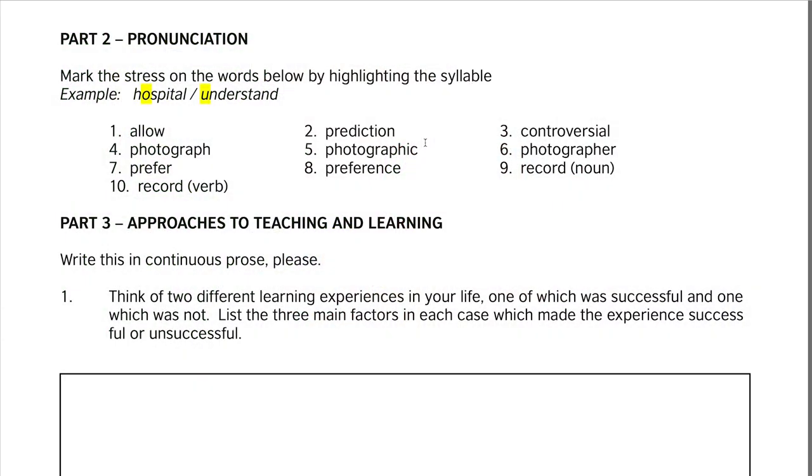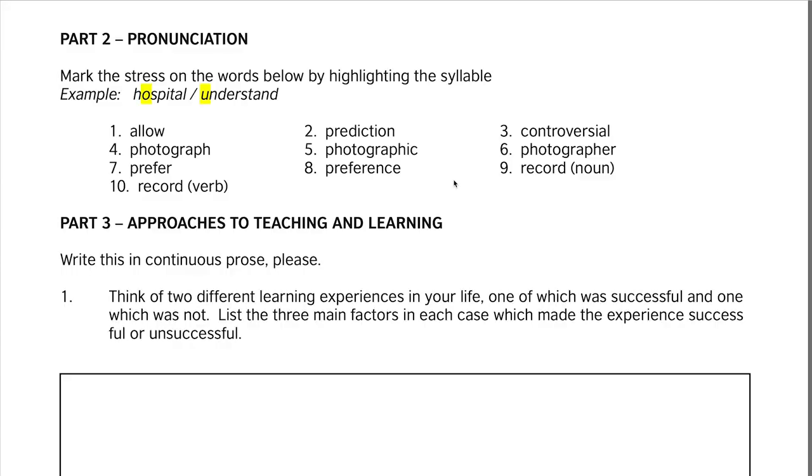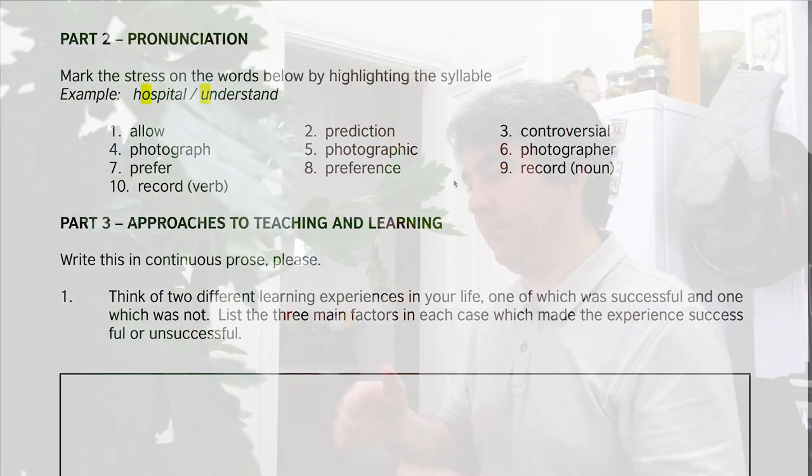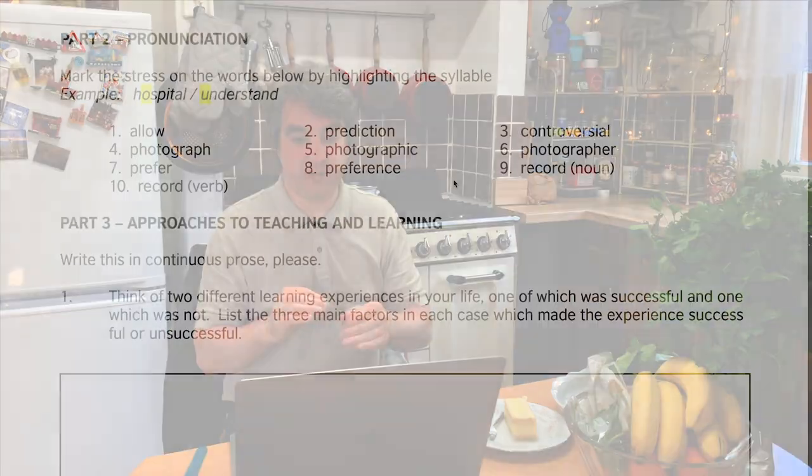Number two: 'prediction' — the stress is on 'DIC': pre-DIC-tion. Next: 'controversial' — the stress is on 'VER': con-tro-VER-sial. Then 'photograph' — PHO-to-graph — and 'photographer' — pho-TOG-ra-pher. You can hear the stress shift between those two. Number seven: 'prefer,' and then 'preference' — PREF-er-ence, two syllables with stress on the first.